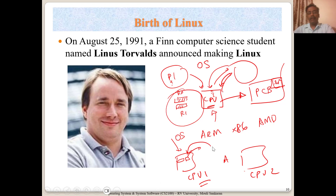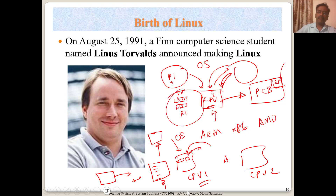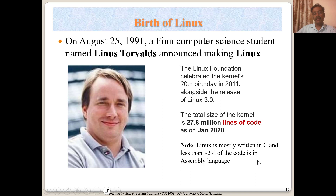Assembly is also used for critical parts of the OS that run frequently and need to be efficient in terms of execution cycles. Though compilers are improving and generating assembly code close to human-written assembly, better optimization comes when people write assembly manually. So the most critical OS functionality is also implemented in assembly. That's why less than 2% of Linux's code is in assembly.